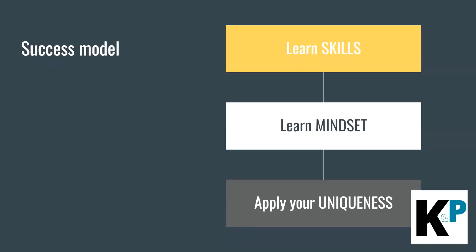So what is the success model? First, learn all the required skill sets. Second, work on your mindset — remember those examples I gave you. Take necessary notes from this video so you can apply them in your day-to-day job and fix your mindset. Third, create a blend of skill and mindset and apply your uniqueness. That's it — this simple, straightforward success model can make you stand out from others using this skill set.